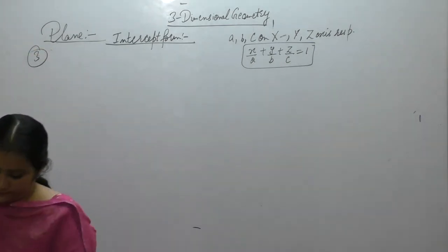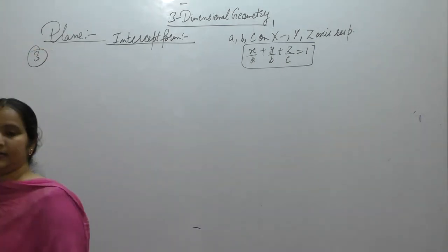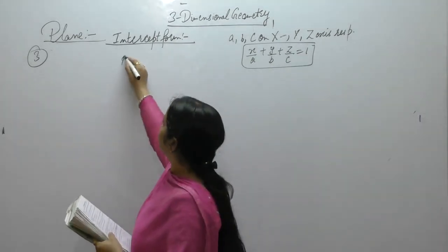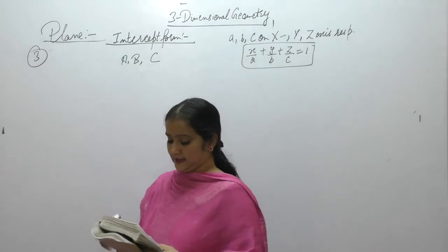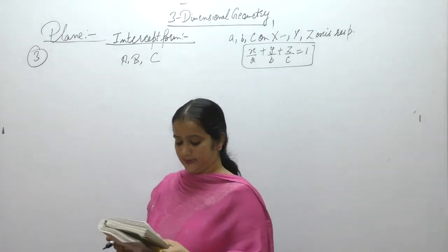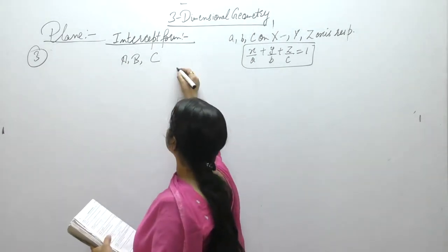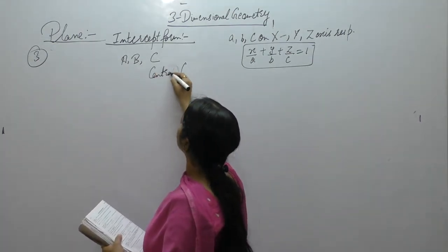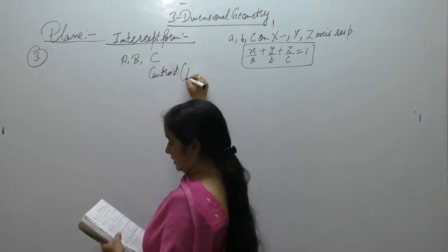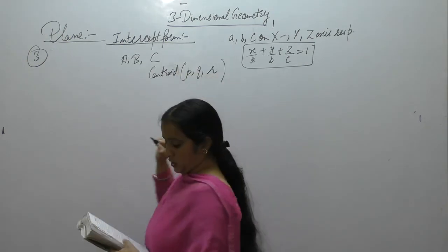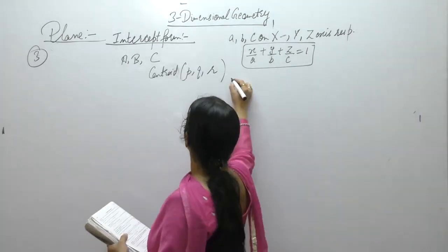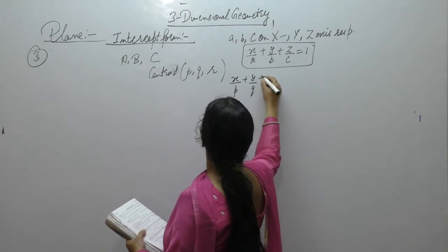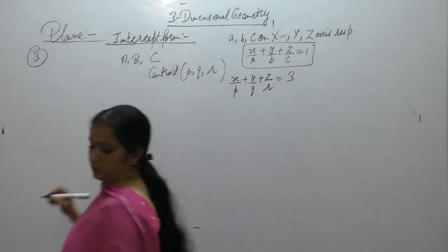A plane meets the coordinate axes in A, B, C such that the centroid of triangle ABC is the point (P, Q, R). Show that the equation of the plane is X/P + Y/Q + Z/R = 3.